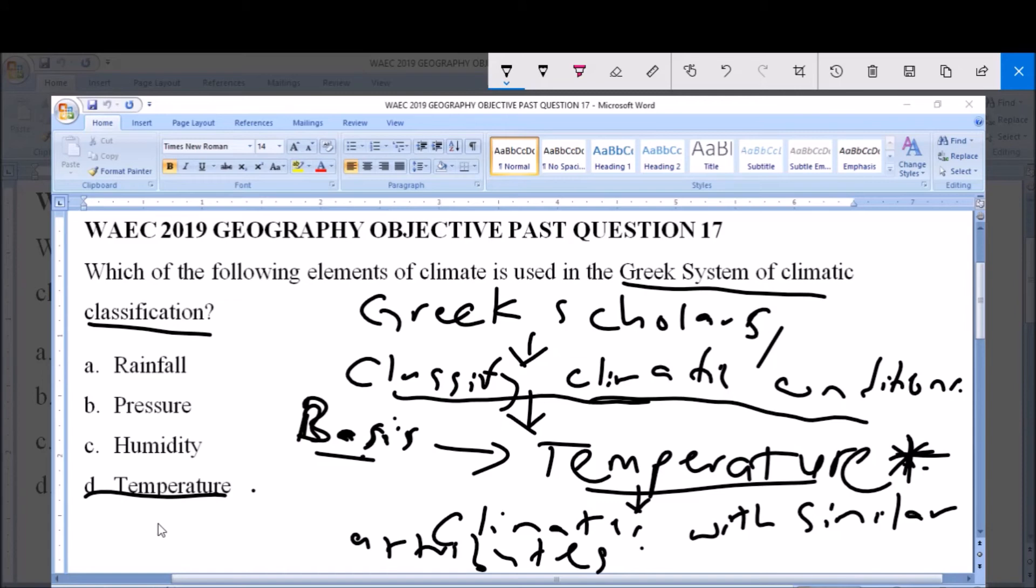Keep in mind that the systems of classification are three in number. The first is Tropic. The second is Temperate. And the third is Polar. So, this was how the Greeks chose to classify climates based on temperature.